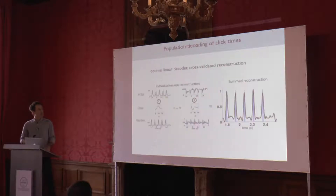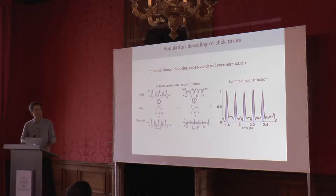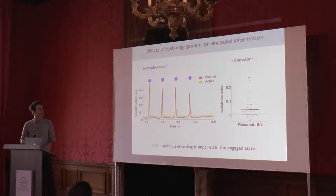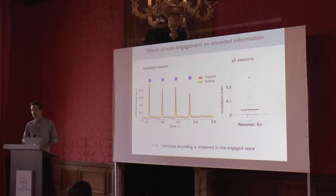To understand what happens at the level of the population, we adopted a decoding approach where for every neuron we determined the best filter that allows it to decode the stimulus from its activity. Every neuron had a filter, and then we sum this over the population to get a summed reconstruction from the population activity of the click times. Comparing the activity in the passive and the active session basically confirmed what we saw at the single neuron level: the representation of the clicks is worse in the active than in the passive case.